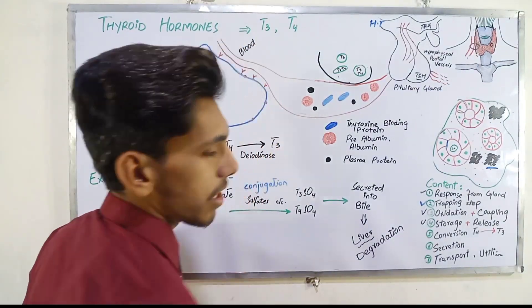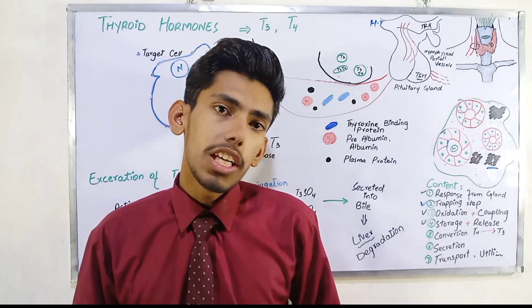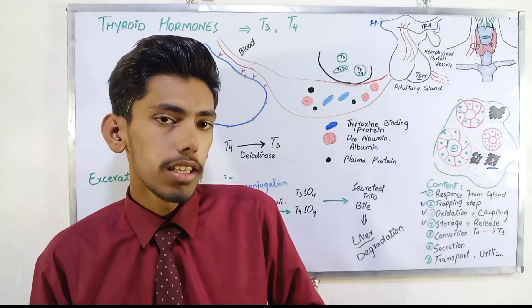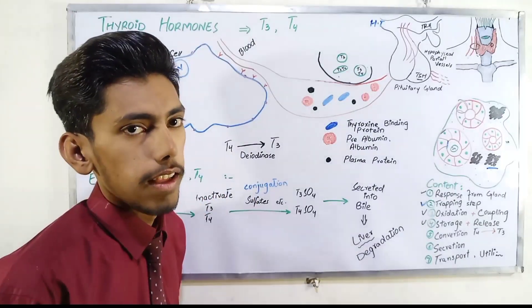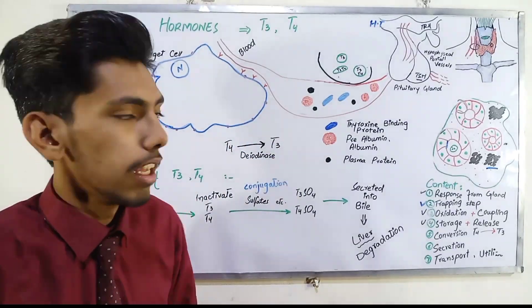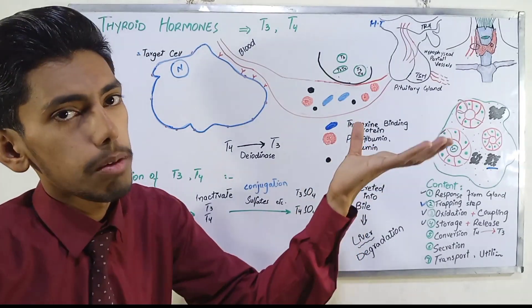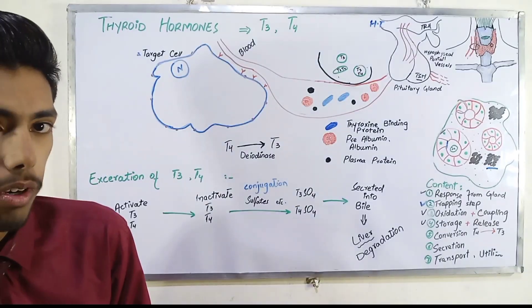First of all, we have seen conversion. Now why do we do conversion here? Basically T4 has 4 iodine attachments and T3 has 3 iodine. So this T4 is less potent and has a long life period in comparison to T3. The work is the same, but T3 has its function performed much better. So we call it highly important in comparison to T4.